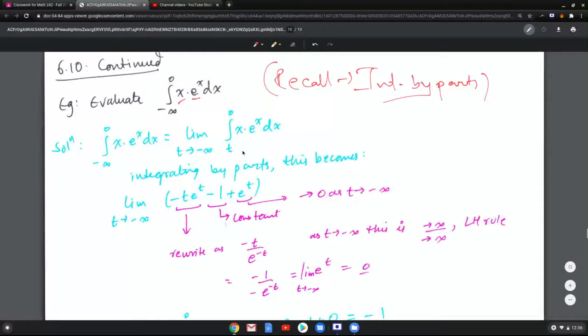So first of all you change this into a limit. Integrating by parts you get negative t, e to the t minus 1 plus e to the t. Now let's analyze this. That's a constant part, leave it as it is. E to the t goes to 0 as t goes to negative infinity, because remember t to the negative large number is 1 over e to the large, which becomes 0.